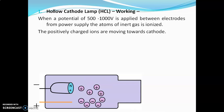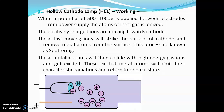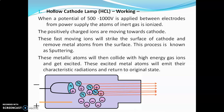The positively charged ions move towards the cathode and negatively charged ions move towards the anode. These fast-moving positively charged ions strike the surface of the cathode and remove metal atoms from the surface — this is known as sputtering. Due to sputtering, many metal atoms are produced in the tube, and these metal atoms then collide with high-energy gas ions and get excited. These excited metal atoms then emit characteristic radiations and return to the original state. This is how the hollow cathode lamp works.